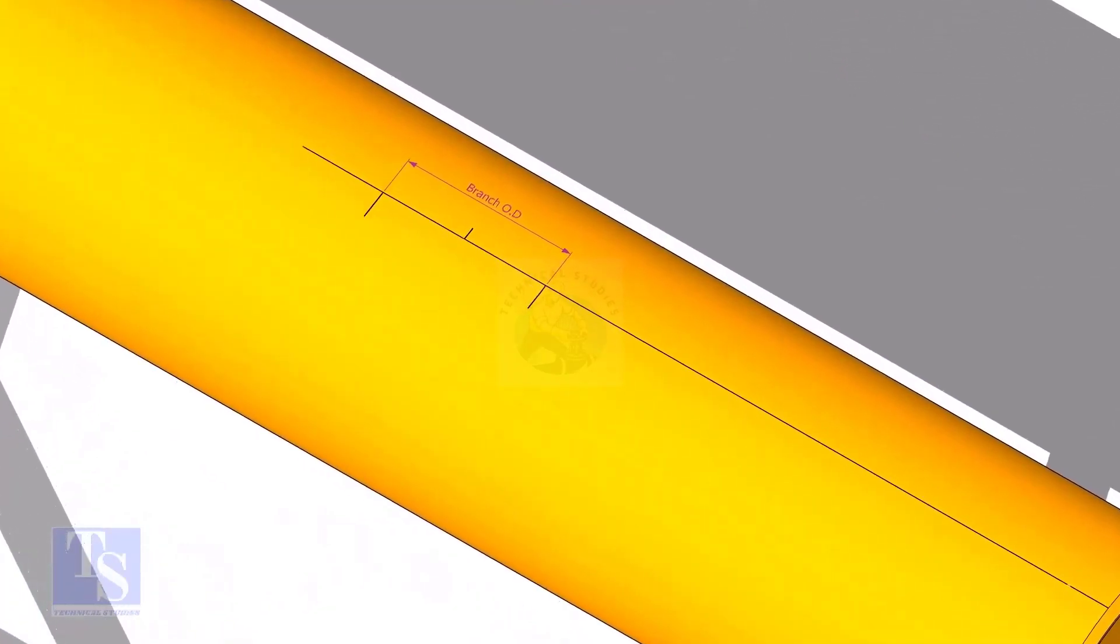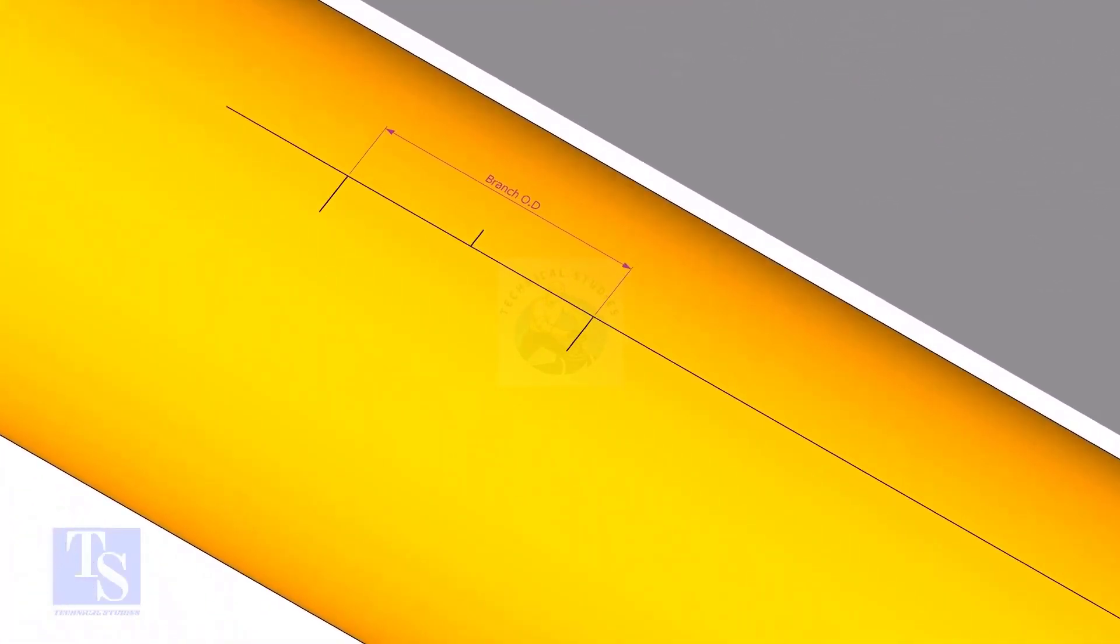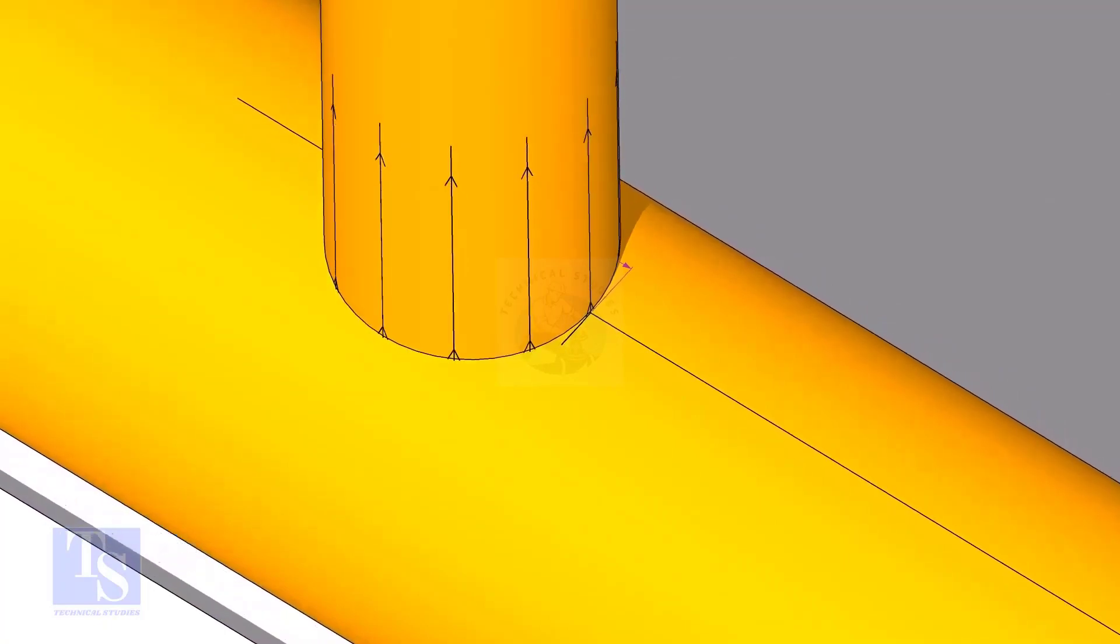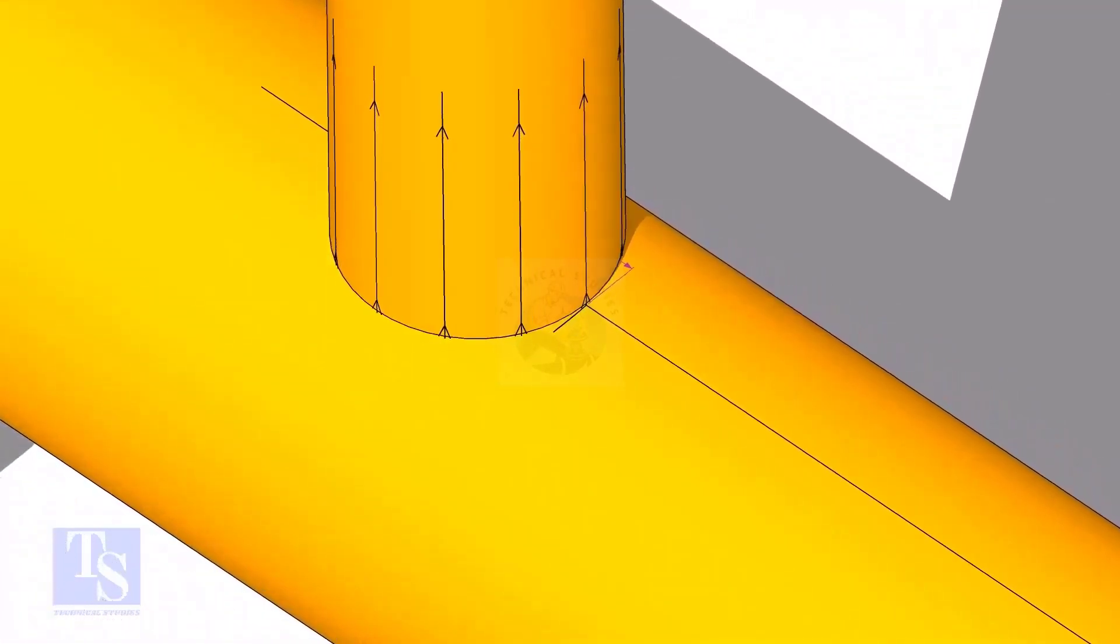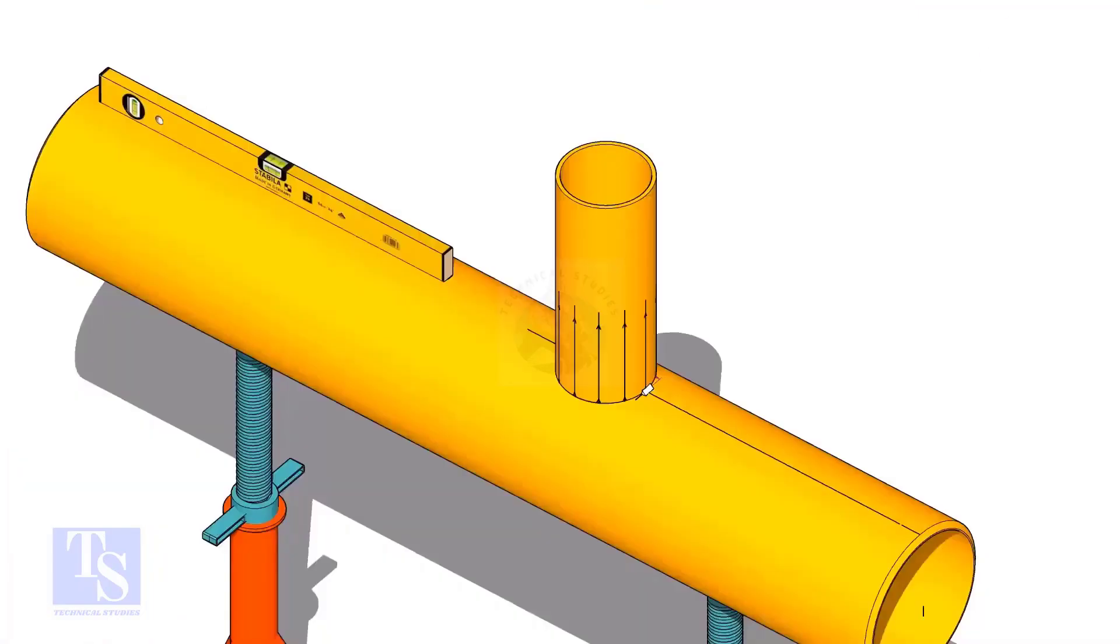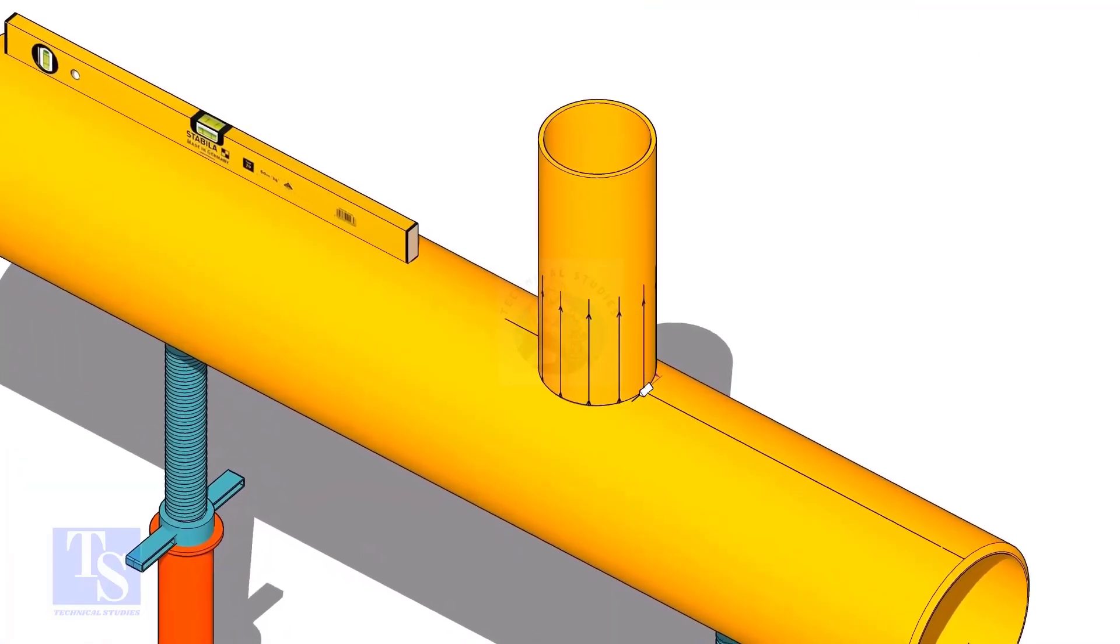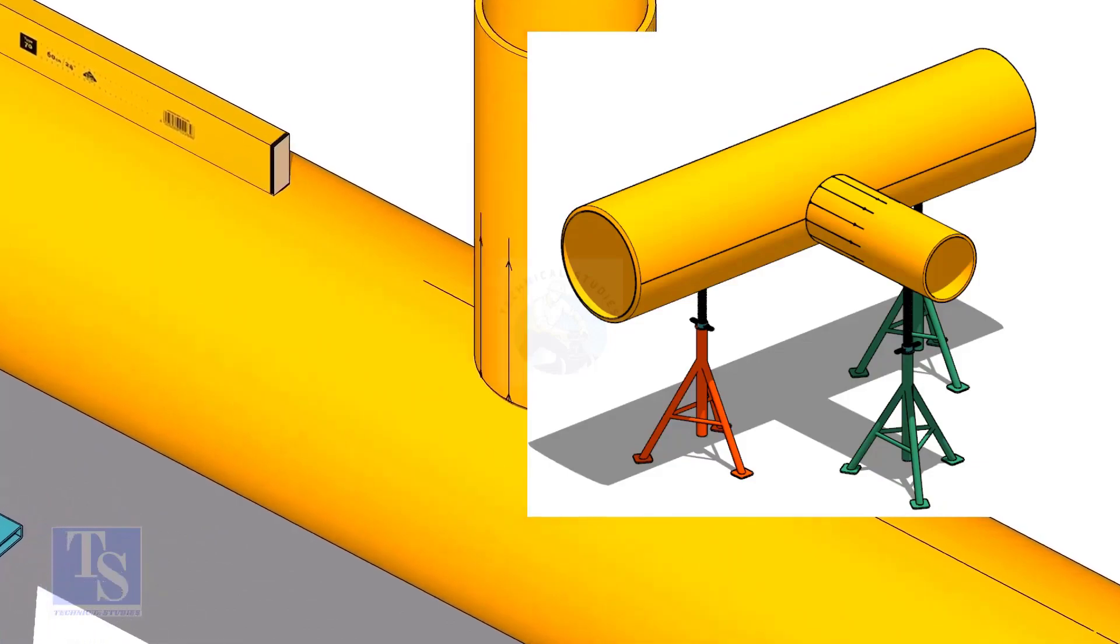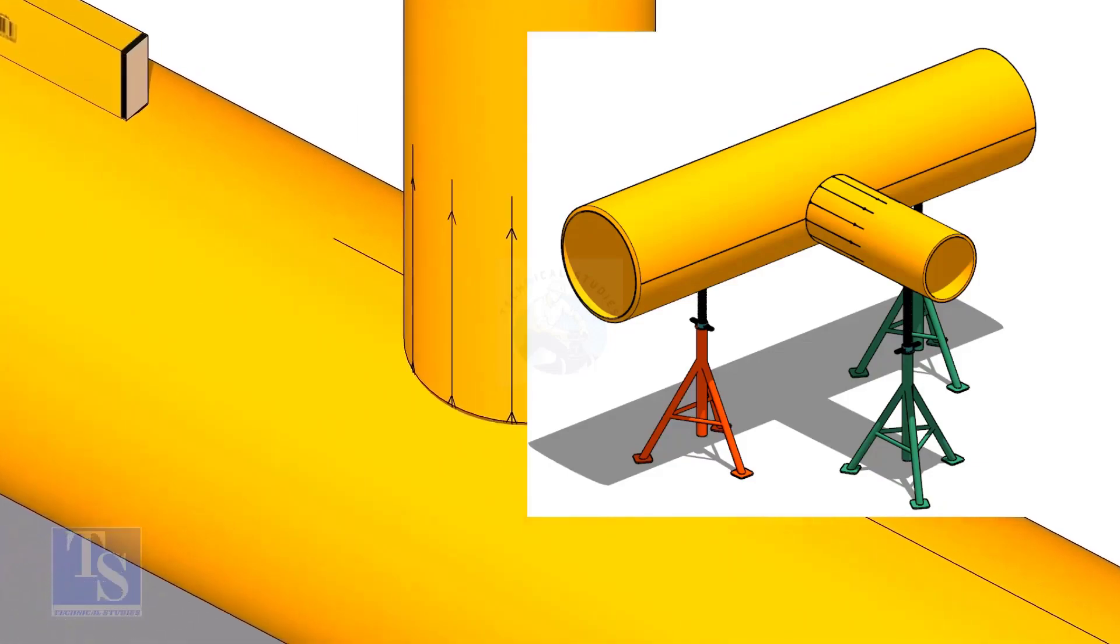Mark the branch OD on the center line of the header. Put the branch exactly on this marking, matching the branch center line. Tack weld the branch on the header just to stand it vertically. If the pipes are large, you can do it in the horizontal position also.